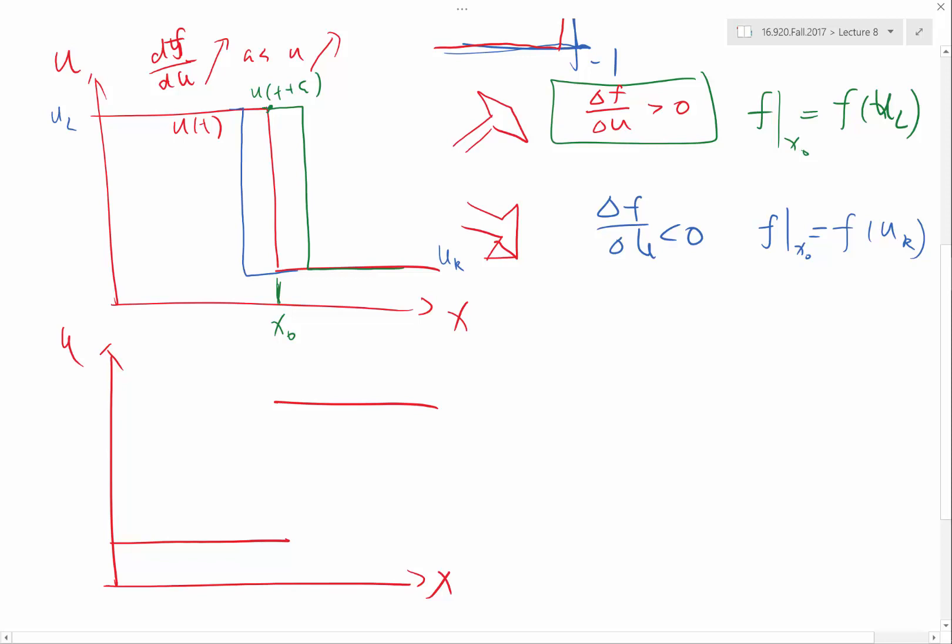Now this behavior is what we captured in the upwinding skip. We bias the f towards either f of ul or f of ur, depending on which side the shock wave is moving.